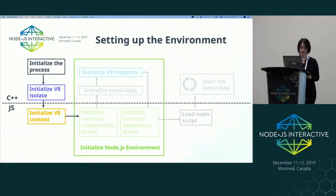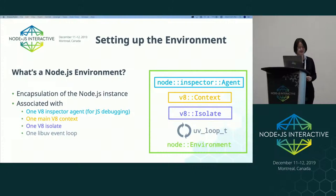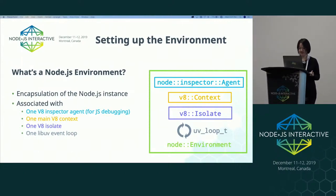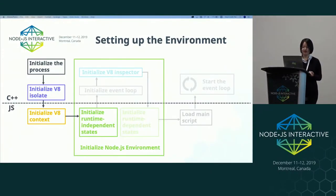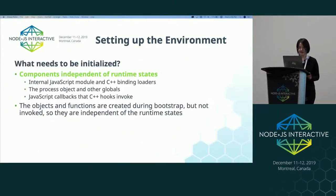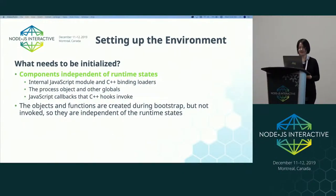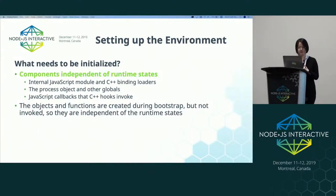After the Node context is initialized, we'll move on to initialize the entire Node environment. A Node environment encapsulates a Node instance — it is associated with one V8 inspector agent, one main V8 context, one V8 isolate, and one libuv event loop. To initialize the environment, we first initialize the components that are independent of runtime states. This includes the internal JavaScript module and C++ binding loaders, the process object and other globals, and JavaScript callbacks that C++ hooks invoke, which will be in charge of invoking user-provided callbacks later. These objects and functions when used by users may depend on runtime states, but the creation of them is runtime independent.